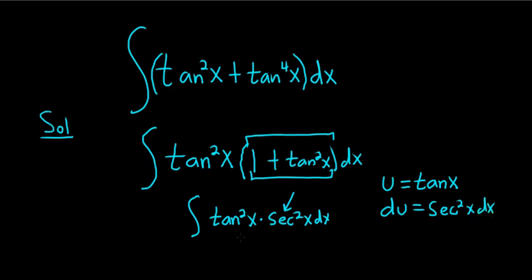And then we make our substitution. So we have the integral of u squared du. Works out perfectly, right? And we can use the power rule now. We add 1. So it's u cubed over 3 plus our arbitrary constant of integration.